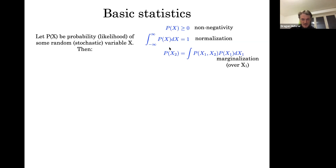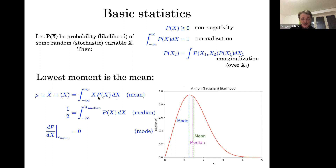If X is a random variable, P(X) is non-negative and normalized. Marginalizing over another parameter means integrating over it. You have the lowest moments: the mean is defined as the expectation value, the median is when you integrate and get to one half, and the mode is where the distribution peaks. Mean, median, and mode all agree for the Gaussian but disagree in general for arbitrary distributions.